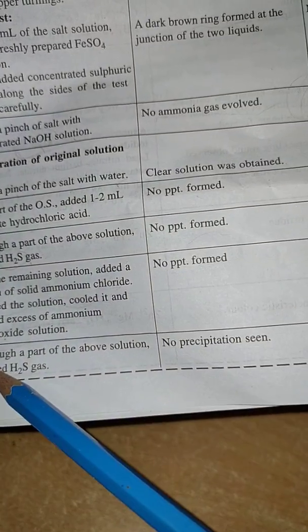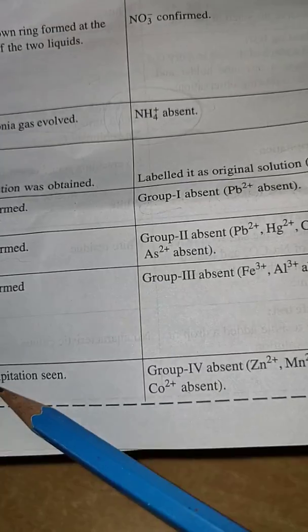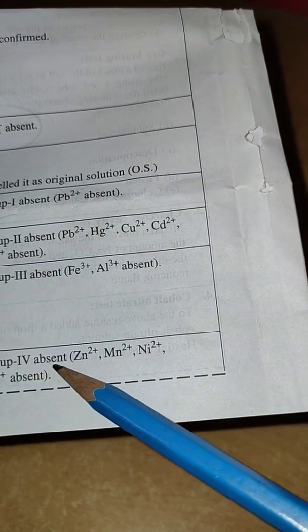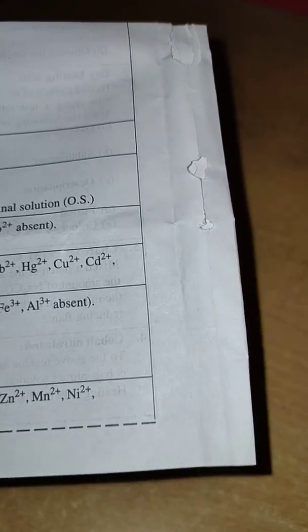Now come to the last part: through a part of the above solution pass H2S gas. No precipitate seen. Group fourth is absent: Zn²⁺, Mn²⁺, Ni²⁺, and Co²⁺ absent.